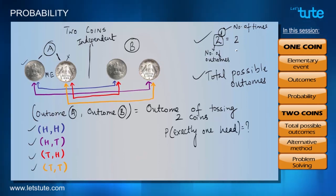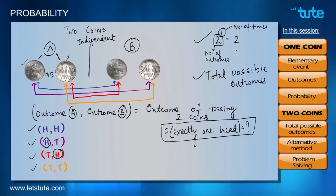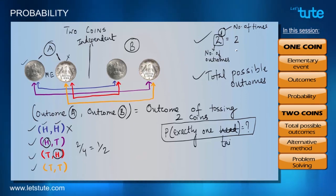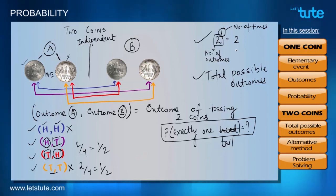Suppose we want to find the probability of getting exactly one head upon tossing two coins. There are four total possible outcomes, and in outcomes two and three we have exactly one head, so the probability is two out of four, which is one by two. We cannot take outcome one since it has two heads. Similarly, for exactly one tail, we find one tail in outcomes two and three, giving a probability of one by two — we exclude outcome four which has two tails.